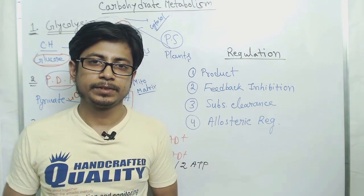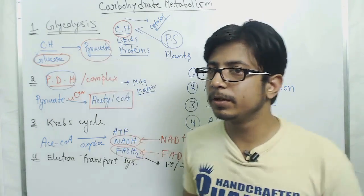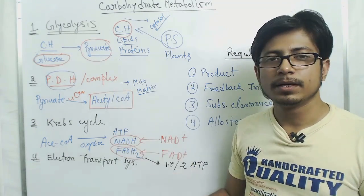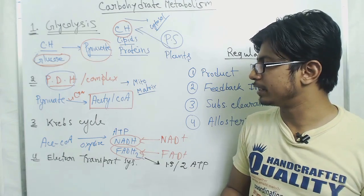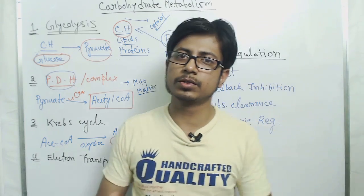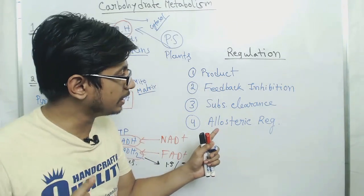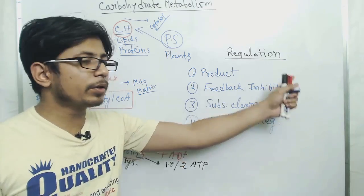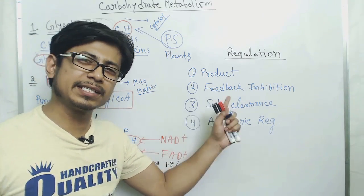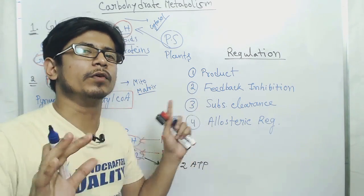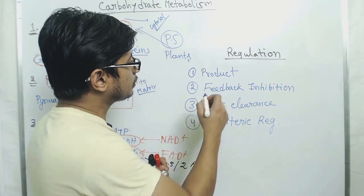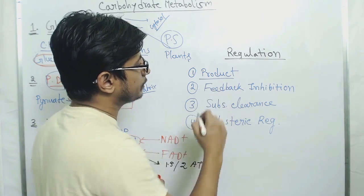I want you to know about each of those four types and examples of those four types. When we talk about glycolysis, pyruvate dehydrogenase complex, and Krebs cycle, I'll also talk about all of them in detail. But here I'm going to explain this mechanism in overview. So what about product inhibition?